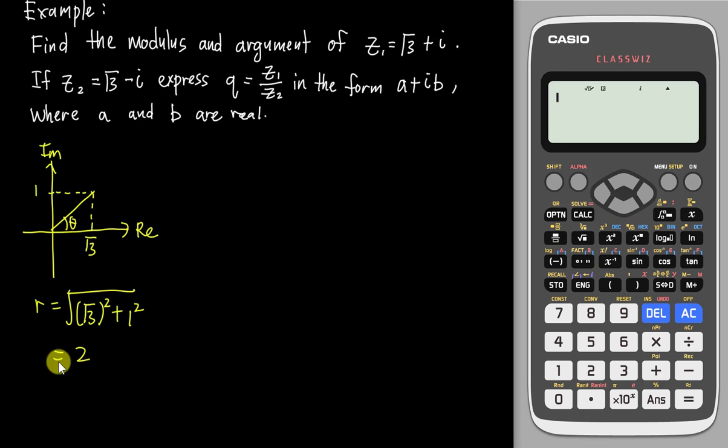Alright, if I want to find my argument. So argument, sometimes they will write a short form like this. Argument for square root 3 plus i. So I will just use the calculator to solve for the argument. Of course, you can still use the inverse tangent to solve. I go into the menu and then look for argument. And then I just insert my vector square root 3 plus i here. Then the calculator will tell me is pi over 6 here.